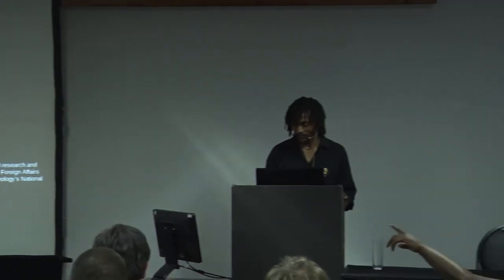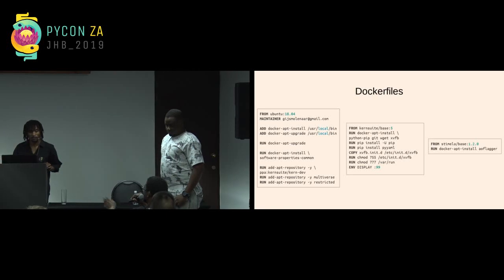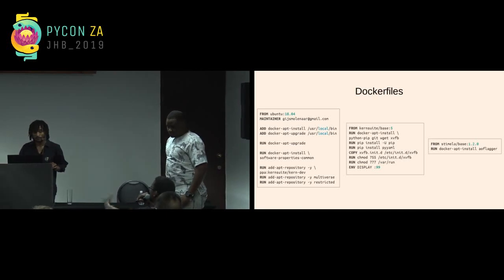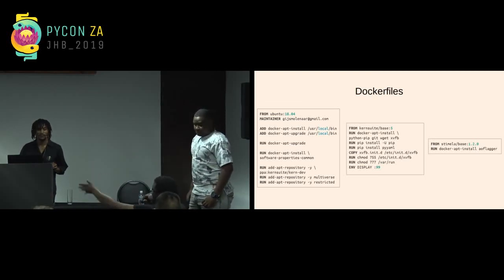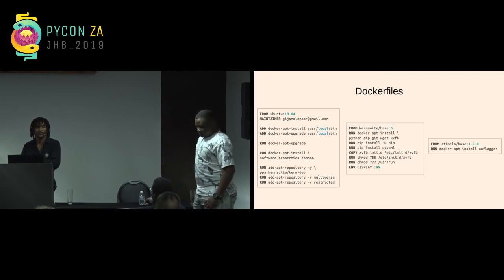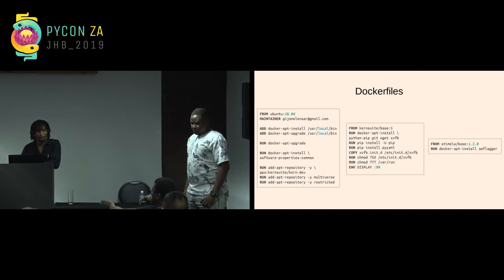Thanks for the talk. Could you go back to the slide where you showed the Docker files? Quick question: how do you determine a fully deterministic system? Because the more you update your software — if someone installs the latest software which has bugs, for example — how do you handle a fully deterministic system, like pinning and all that?